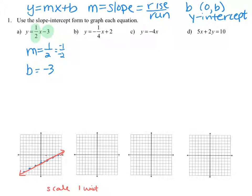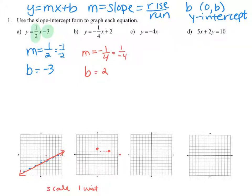For the second example, y equals negative one-fourth x plus 2. The slope is negative one-fourth and b is 2. We begin graphing at the y-intercept of positive 2, then move down 1 unit and to the right 4 units. Equivalently, using positive 1 over negative 4, go back to the y-intercept and move up 1 and to the left 4. We connect those points with a line to see the graph of the linear equation.